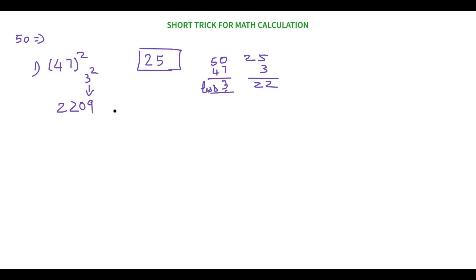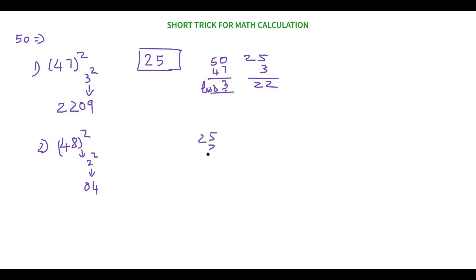Let's try 48 square. As before, remember 25. How much less is 48 than 50? It's 2 less. So two square is 04. Then subtract 2 from 25 to get 23. Our answer is 2304.